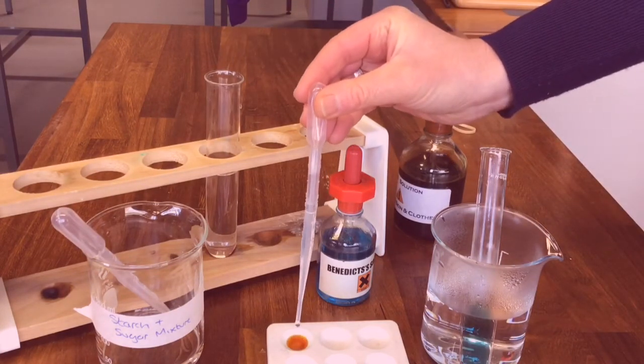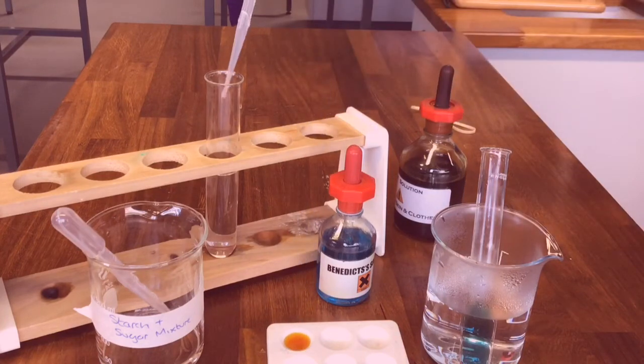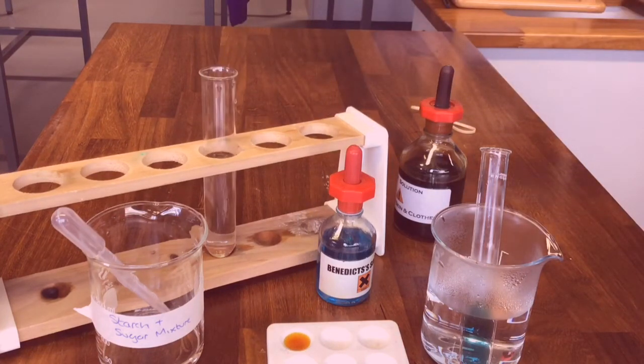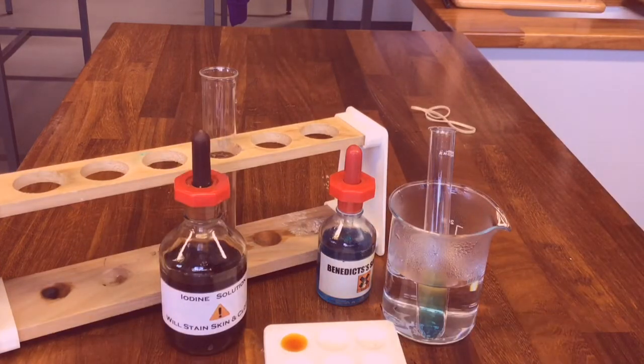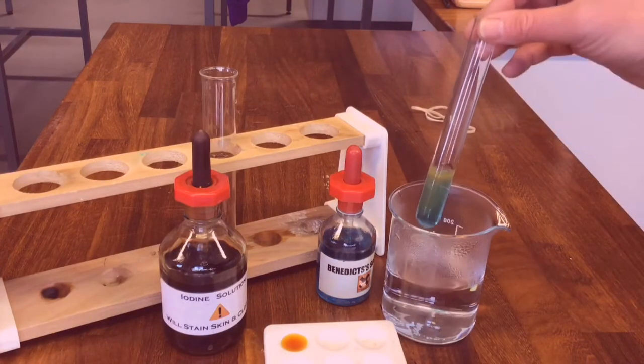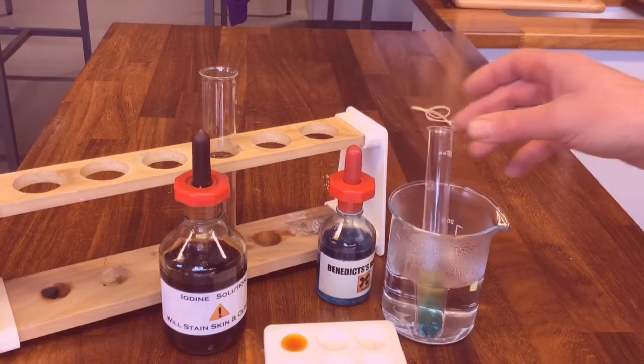We add a couple of drops and you can see that it has stayed yellow-brown which means there is no starch present. The Benedict's is starting to change color which means there is sugar present.